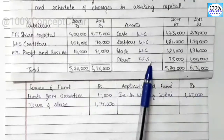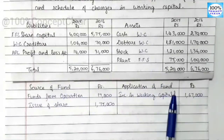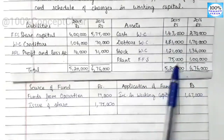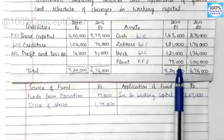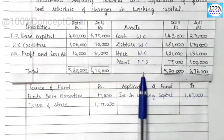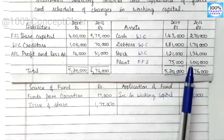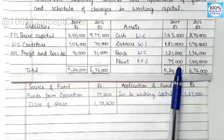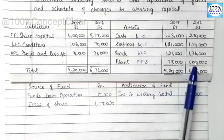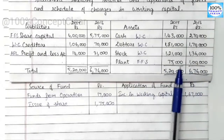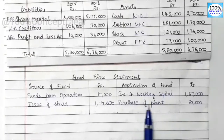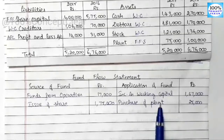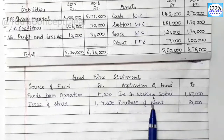On the asset side, we have plant, which appears in the fund flow statement. In 2015 it is 75,000 and in 2016 it is 1,00,000. The plant amount has increased, meaning we purchased plant. There is no depreciation to consider here. The increase is 1,00,000 minus 75,000 equals 25,000. So purchase of plant worth 25,000 is noted under applications.